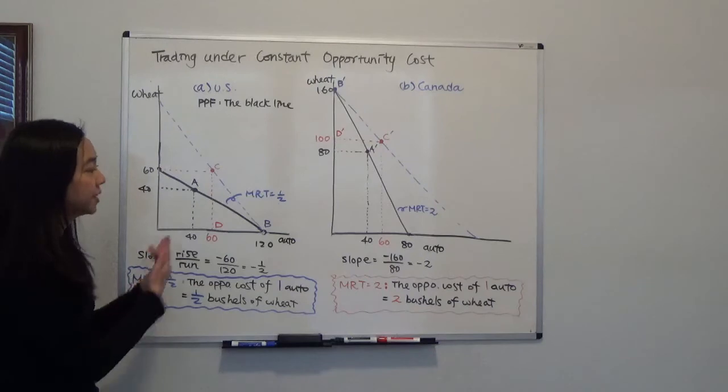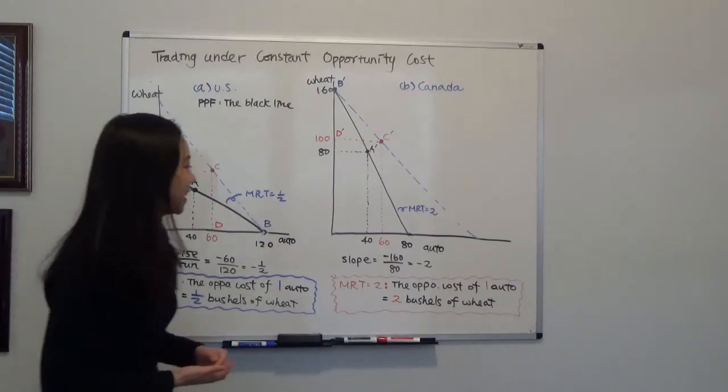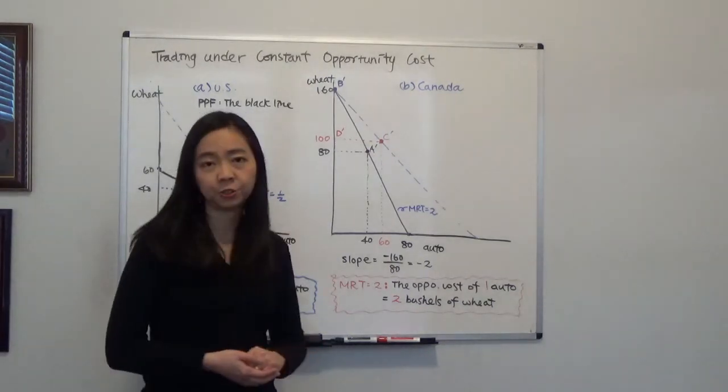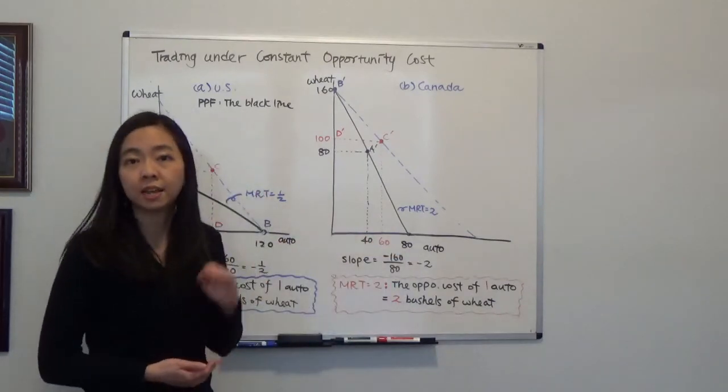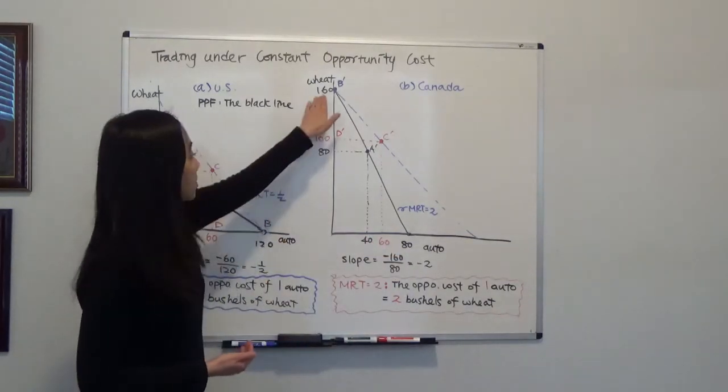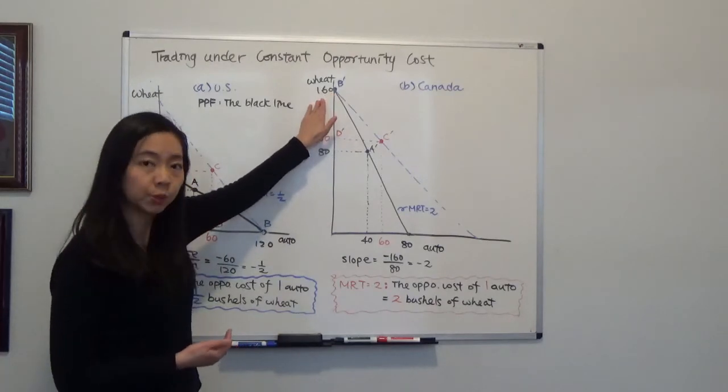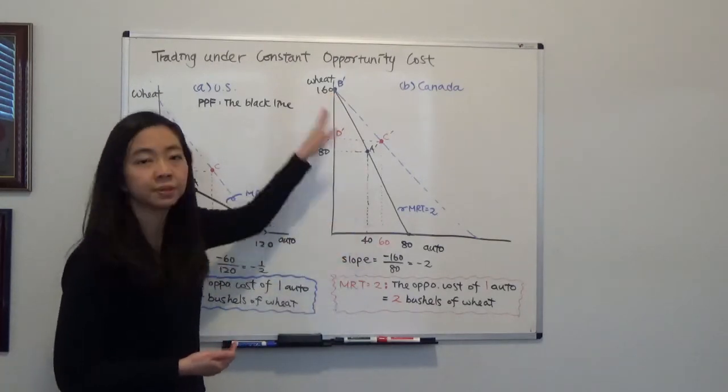Now moving on to Canada. In Canada, the textbook tells you that Canada can produce either 80 automobiles and no wheat, or 160 bushels of wheat and no auto, or any combination in between.